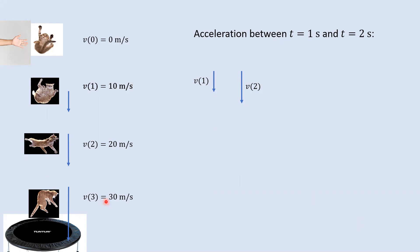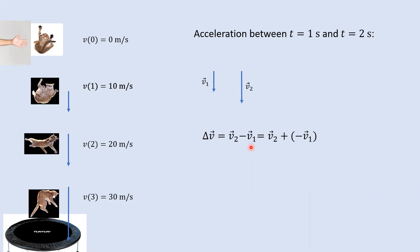Let's look at the acceleration between times one second and two seconds. Since acceleration is the change in velocity over change in time, I've translated my two velocity vectors over here. Remember, vectors are movable. I still have vectors with the same length and direction. I'm calling them the speed at time one and the speed at time two — those are the lengths of these vectors. I've turned them into actual vector symbols, because change in velocity is final minus initial.